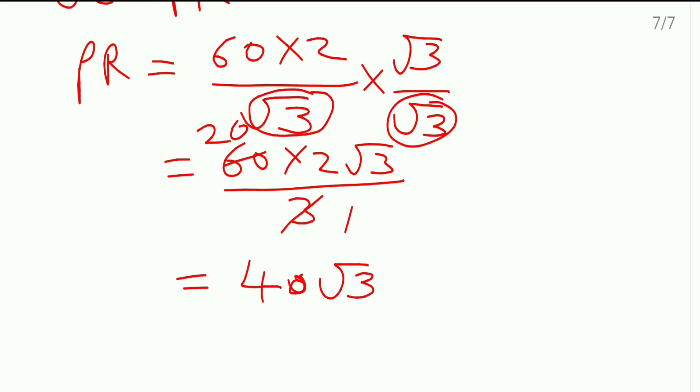So the length of the string is 40 root 3 meters. Final statement supposed to be there. So the length of the string is 40 root 3 meters. I hope all of you understood this sum. Thank you.